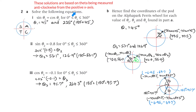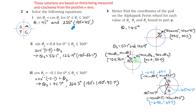Question 2a: solve sine theta equals cosine theta for theta greater than or equal to 0 and less than or equal to 360 degrees. Mine are based on measured anti-clockwise from the positive x-axis. Remember all stations to cans — in the first quadrant, all sine, cosine, and tan are all positive. Sine is positive in the second quadrant, tan is positive in the third, cosine is positive in the fourth. The only quadrants where cosine and sine are the same sign are the first and third. If they're equal, that's root 2 on 2 or cosine of 45. So it's going to be 45 degrees, and also 180 plus 45, which is 225 degrees.